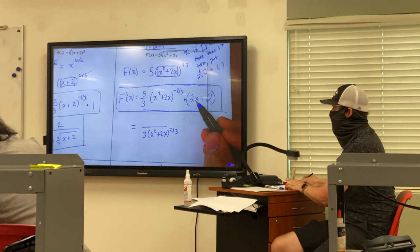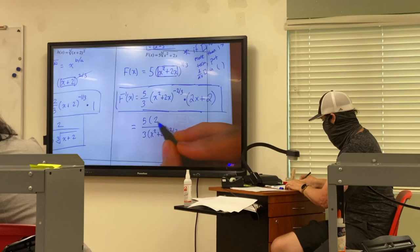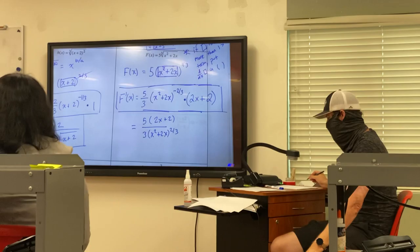And where would I put the 2x plus 2? I can actually put that into the numerator, so this would be 5 parentheses 2x plus 2, and that's a perfect answer.